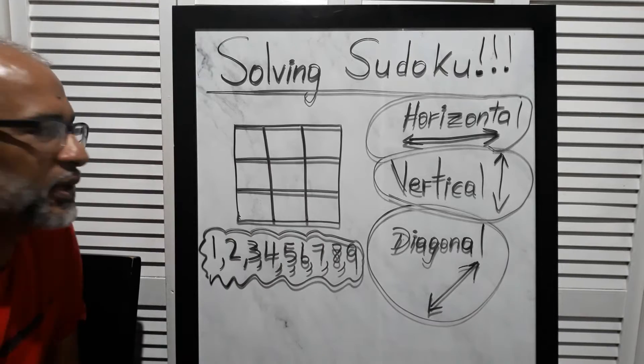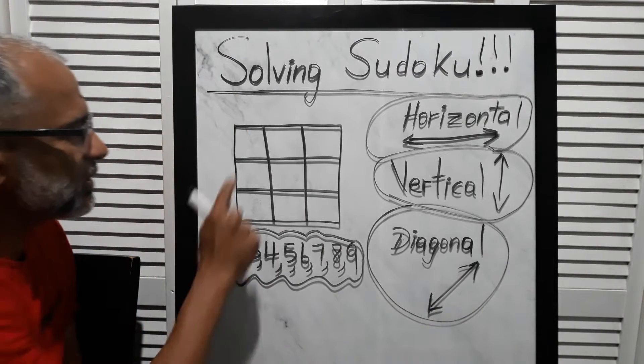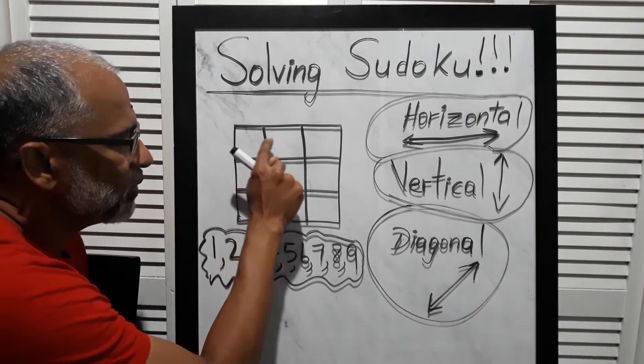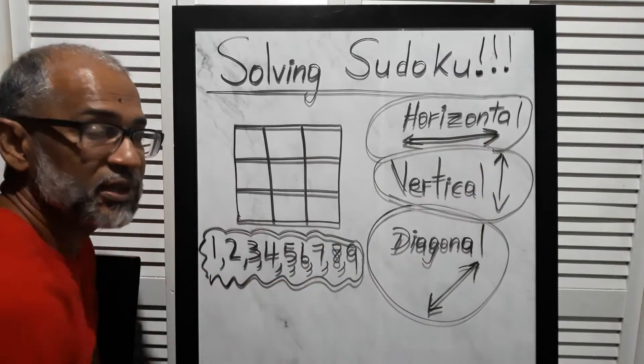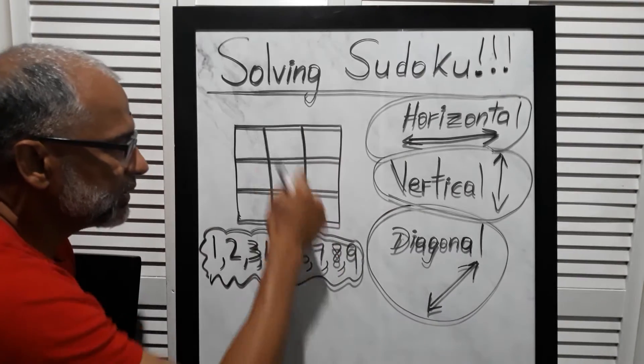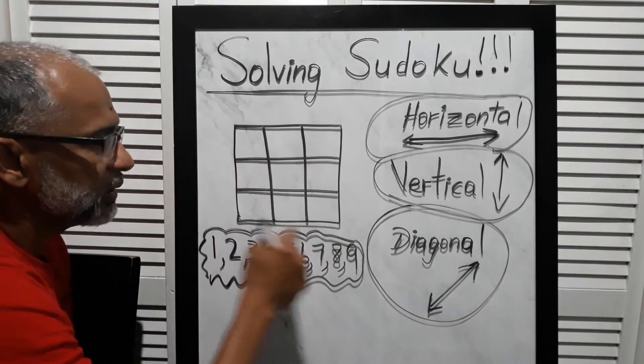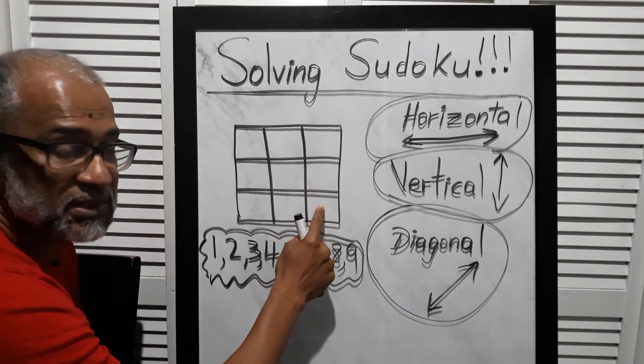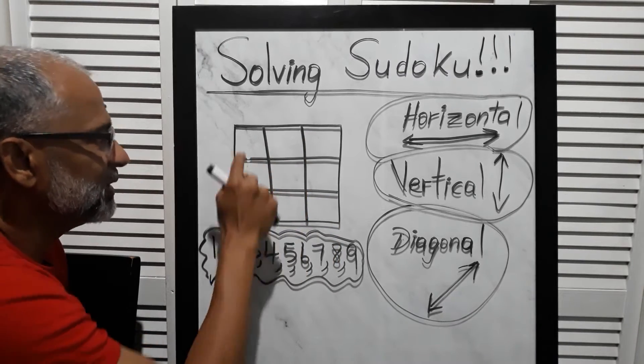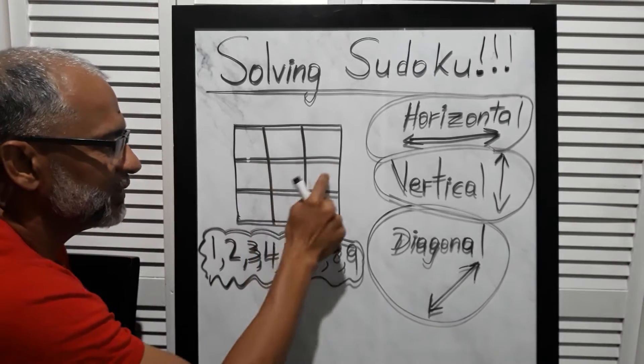But how do we put them? When you add up these three numbers across side to side—it's called horizontal—and vertically, or vertical, it has to add up to 15. These three boxes: 15, 15, 15, 15, 15.